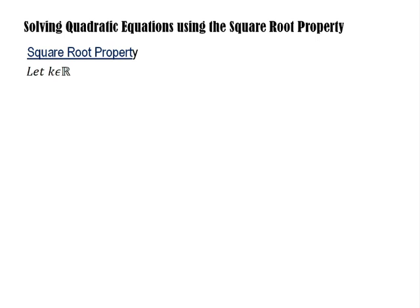Hello ladies and gentlemen, this is Sir Ricky with Philippine Organization of Mentors in Mathematics. Today we will be discussing on how to solve quadratic equations by using the square root property. Let us define the square root property. Let k be equal to a real number. If x squared is equal to k, then x is equal to plus or minus the square root of k. The value of k here is any real number. For quadratic equations in the form x squared equals k, all we have to do is to take the square root of x squared and also the square root of k, and then solve for the solution set.